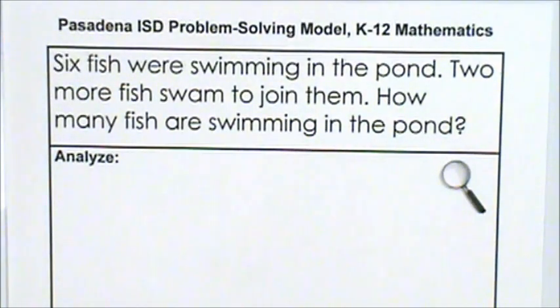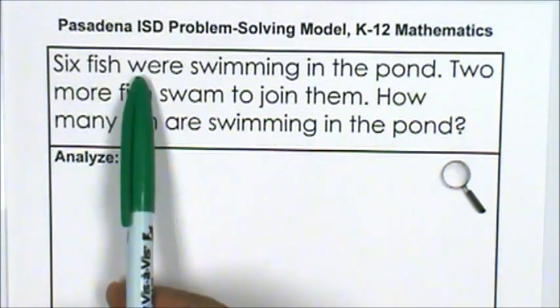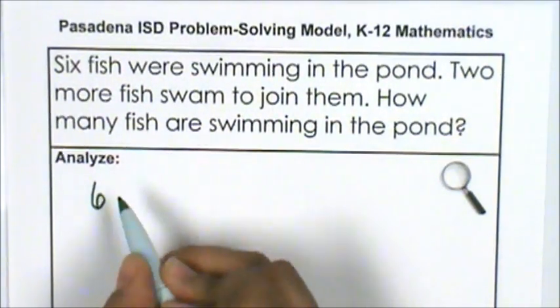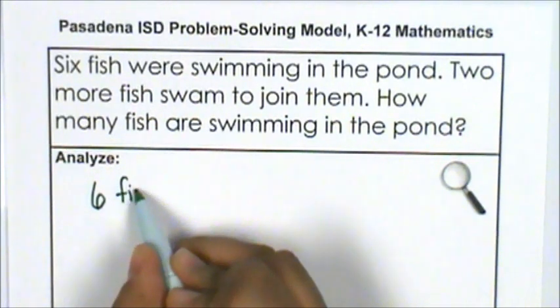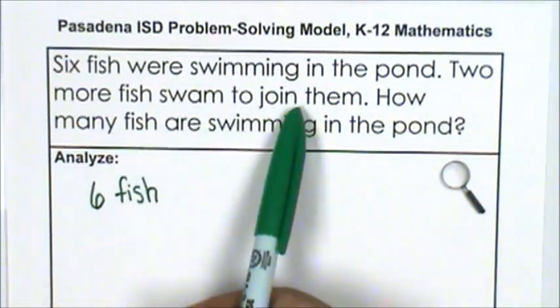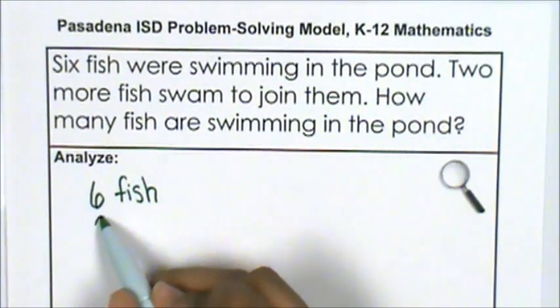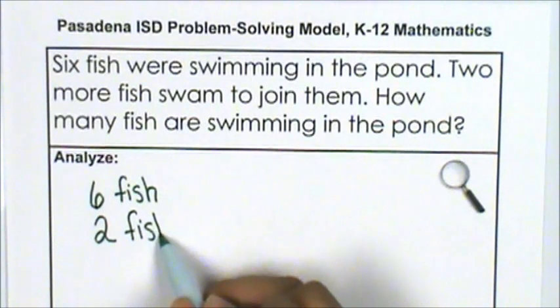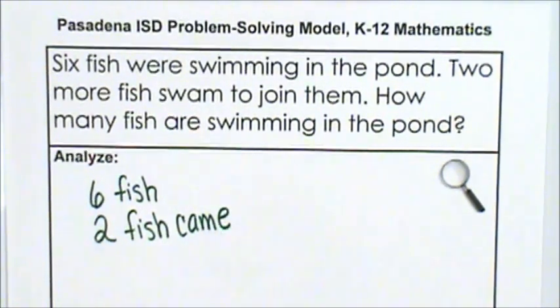What information do I already know after reading the problem? Well, I know that there were six fish swimming in the pond. And then I remember that two other fish started swimming. Two more fish swam to join them. So we have two fish that came over and started to swim with them too.